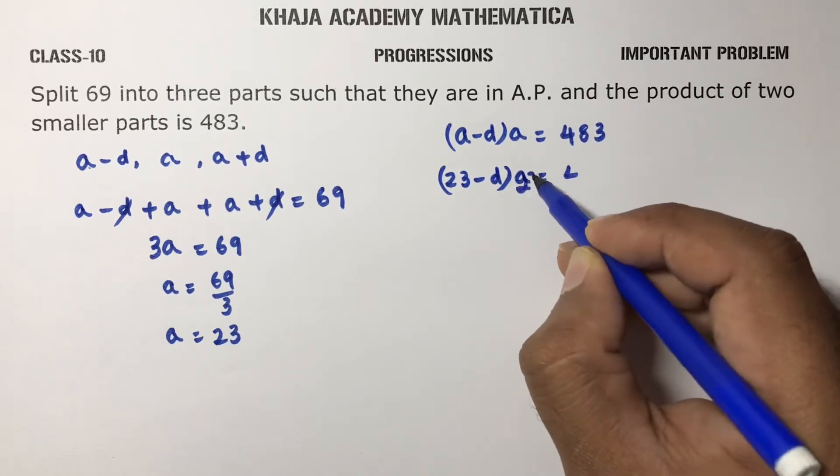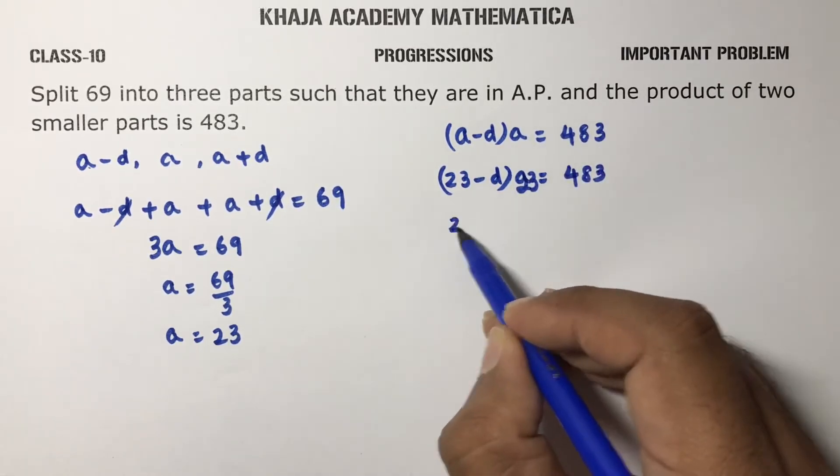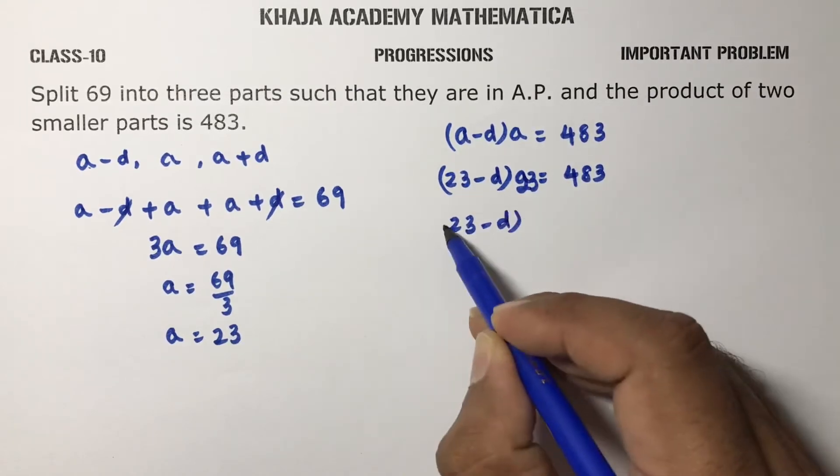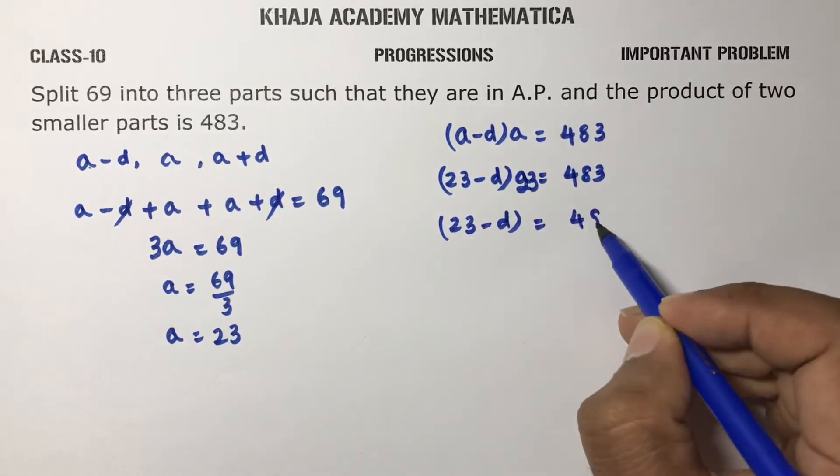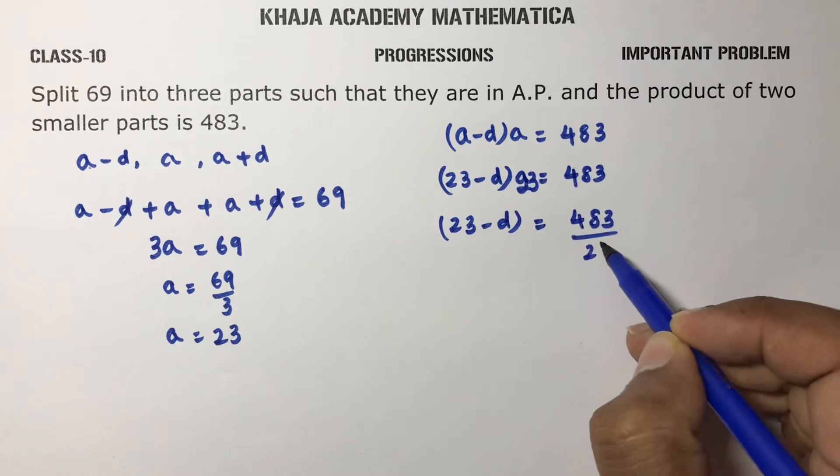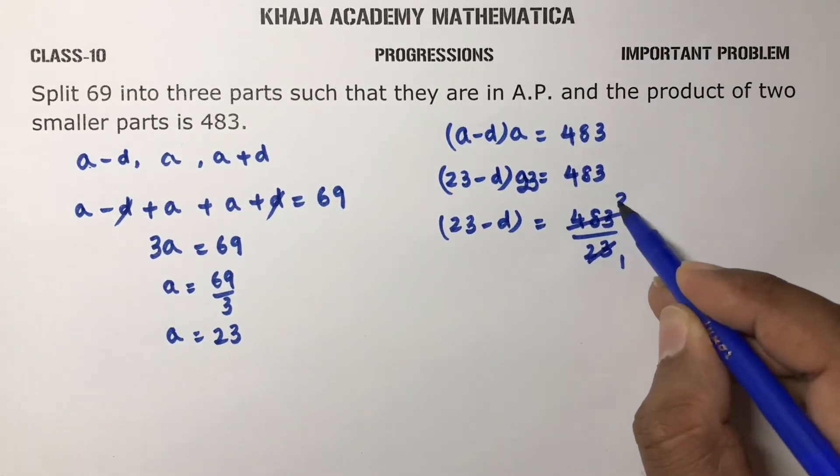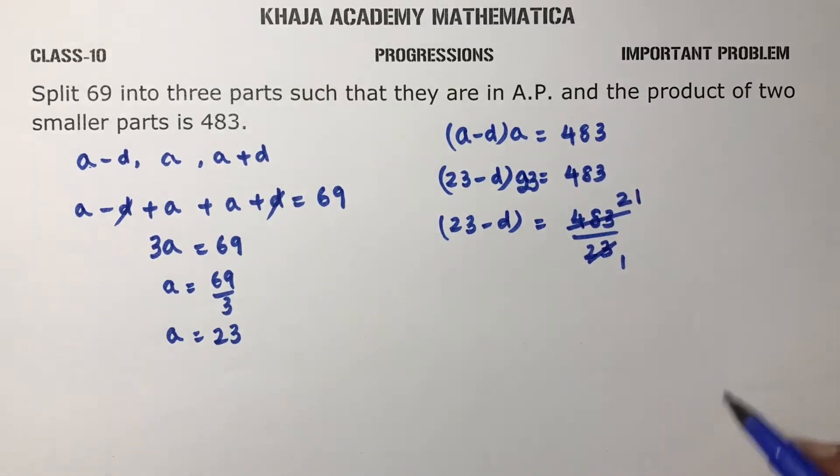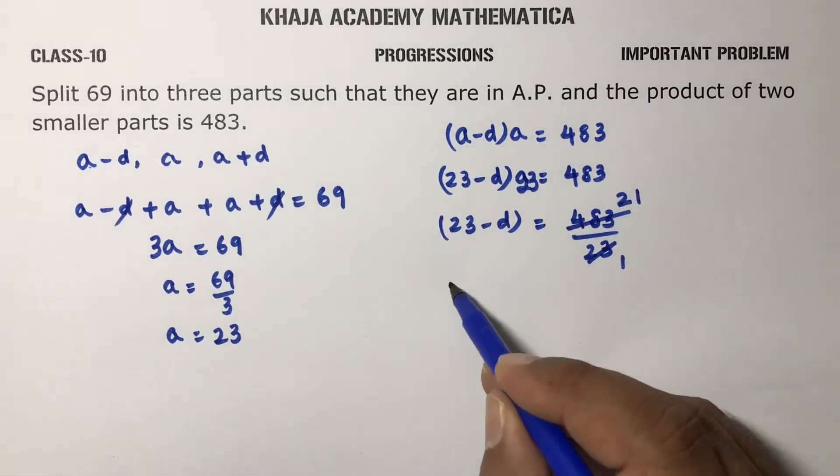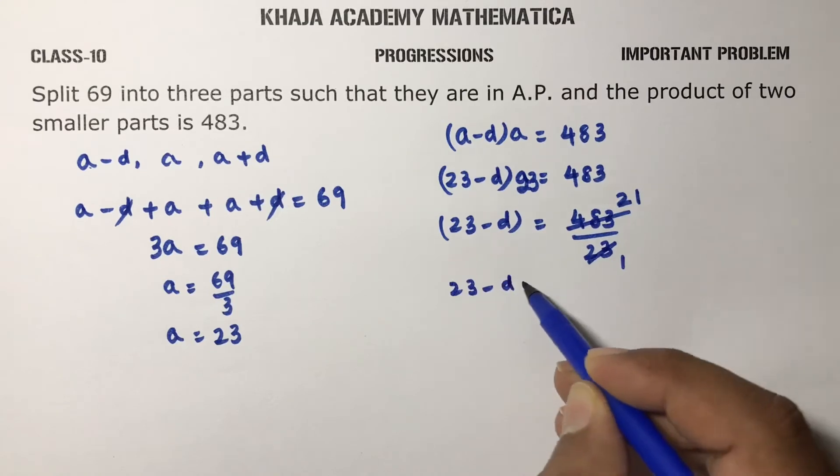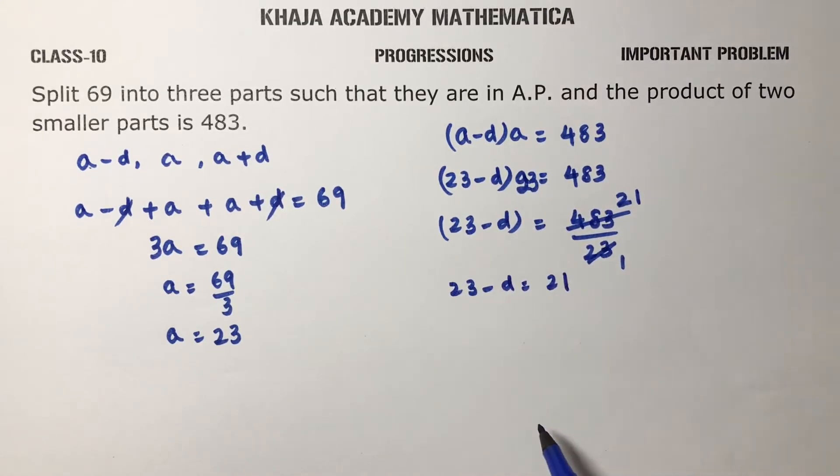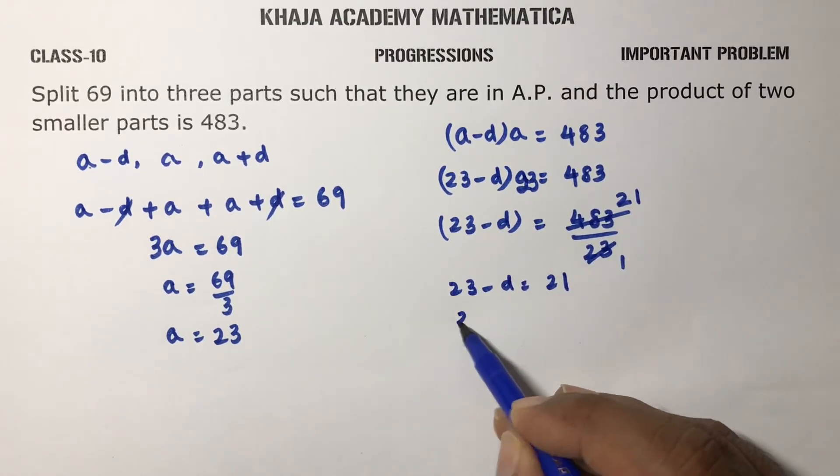So a value is again 23 is 483. So 23 minus d is 483 by 23. 23 times 1, 23 times 2... so 23 minus d is 46, 23 is left, 23 times 1, so 23 minus d is 21.